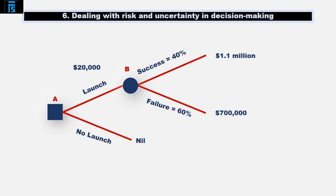Rolling back to node A, Jack has a decision to make. He can choose which leg to go down and he'll choose the leg with the highest value associated with it. If he launches, it will be worth the $20,000 at node A on average. If he doesn't, he'll get nil. So based on expected values, he will launch.